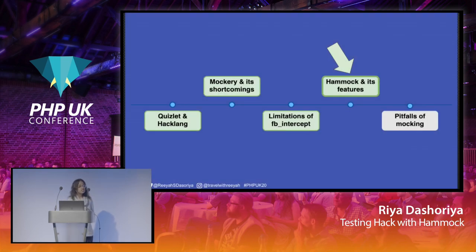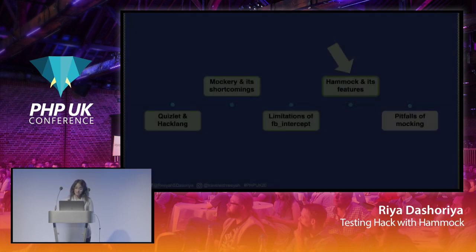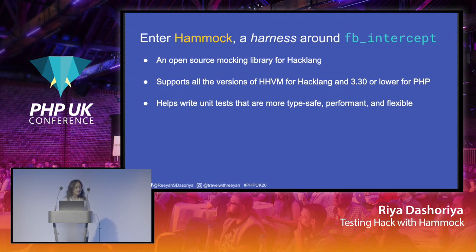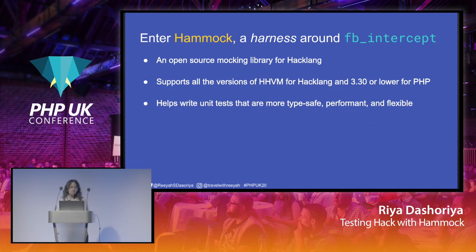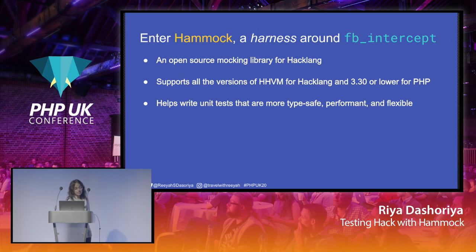Because of all these shortcomings of Mockery and all the pitfalls of FB Intercept, we created another mocking library called Hammock. We recently open sourced it in December 2019. It's a mocking library for Hacklang and supports all versions of HHVM. If your PHP code is running on HHVM 3.30 or lower versions, you can still use this mocking library. It helps write unit tests that are more type safe, performant, and flexible.